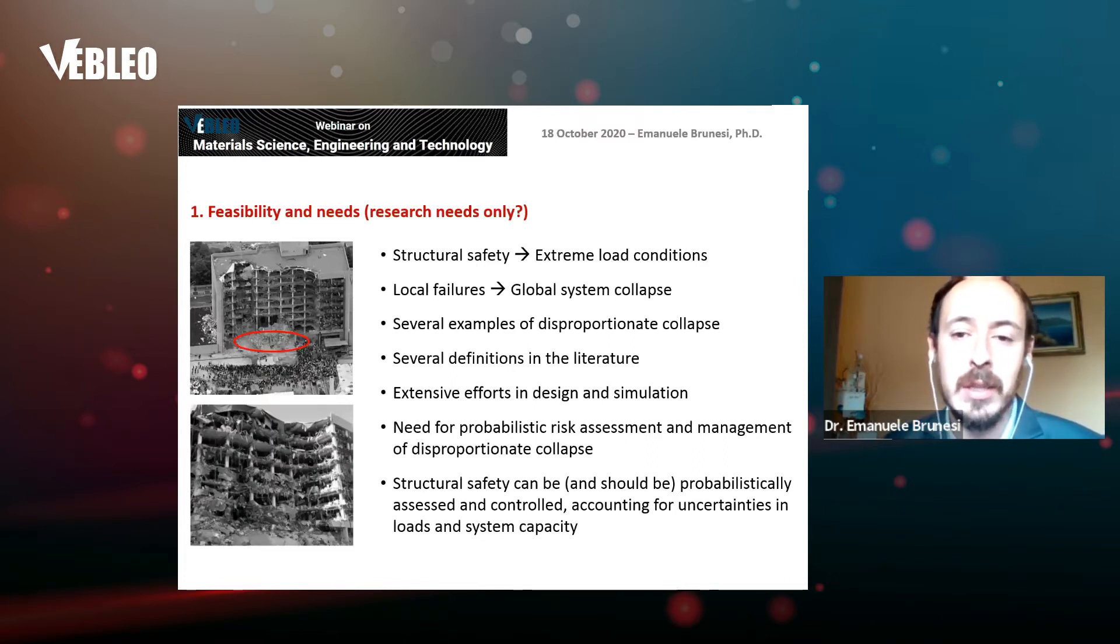So feasibility and needs. It is well known that structural safety is generally assessed without considering extreme load conditions that might happen during the lifetime of a structure and might cause global system collapse as a result of local failure in a single specific portion of the structure. This local failure will then spread into the rest of the structure, causing this sort of disproportionate collapse.